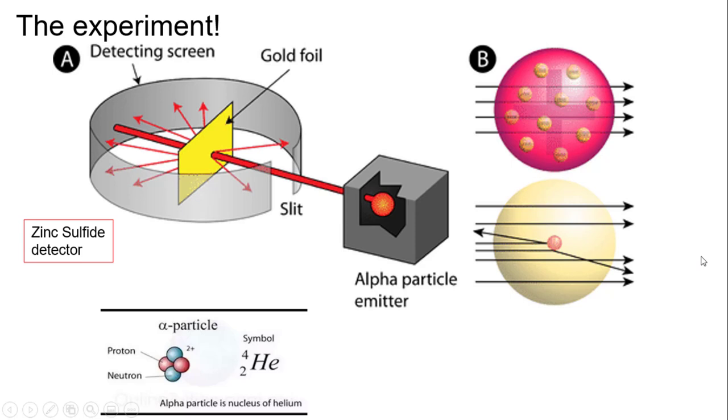They also discover that not only is the plum pudding model wrong, but also because the alpha particles are positively charged, the only way for this to bounce back is for the nucleus to be a large mass that is also positively charged. It's how they figured out that the nucleus has a positive charge in an atom.